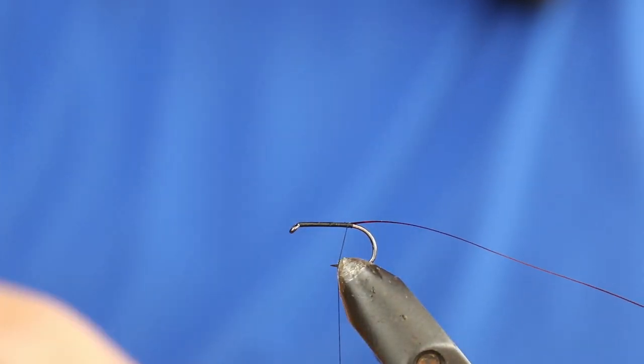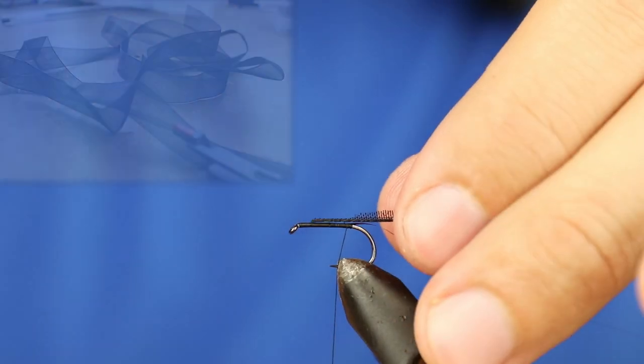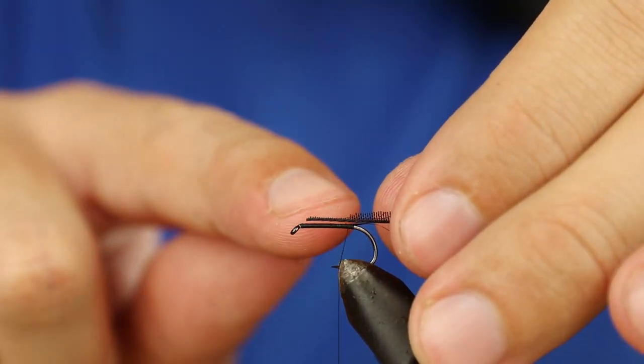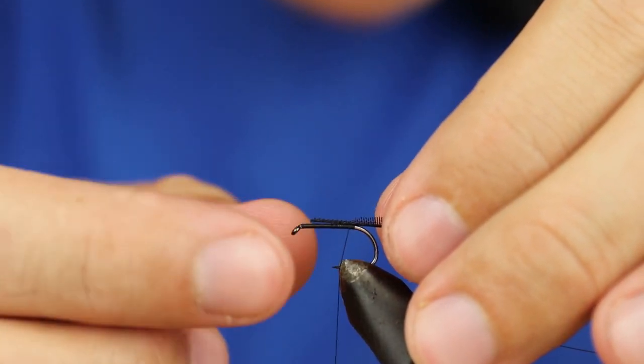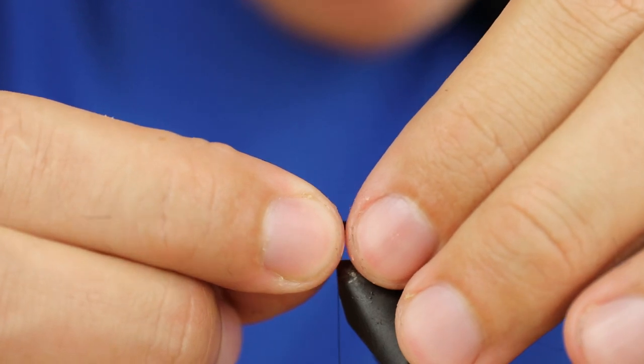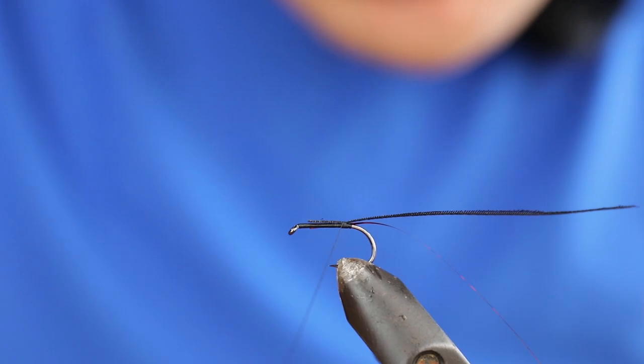Then do the same with the black pseudo hackle. What I've done with this black pseudo hackle is cut off a small piece where I'm going to tie it in, so there are no extra fibers pointing out. As we tie this in, it should help with the taper for the body.